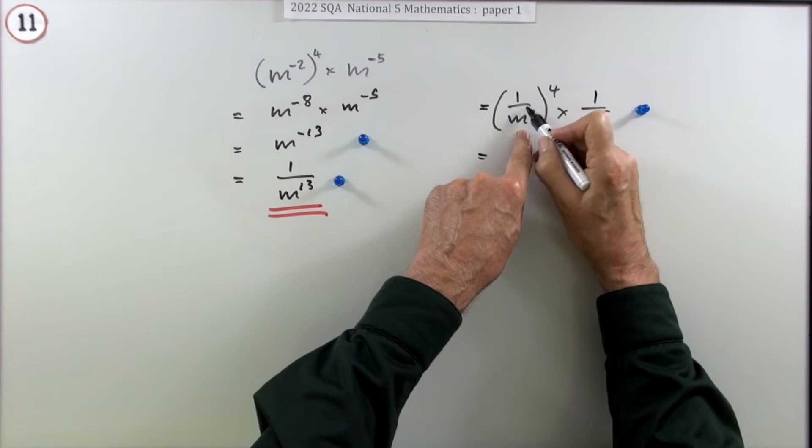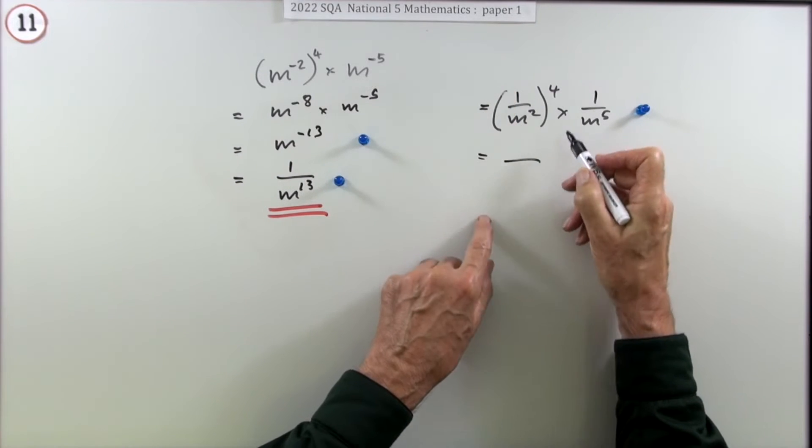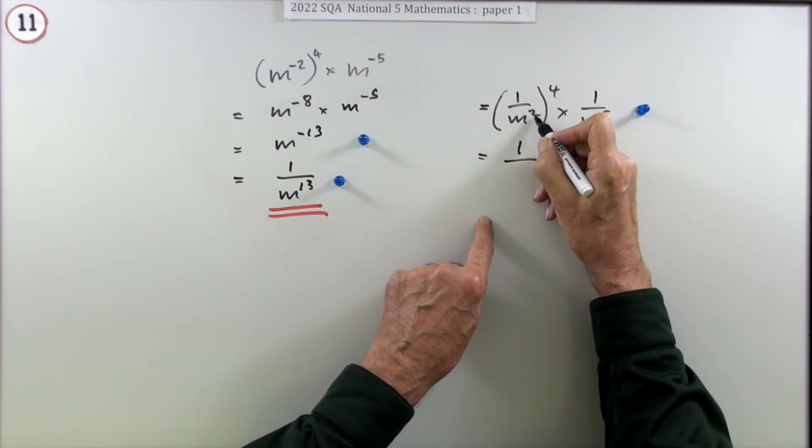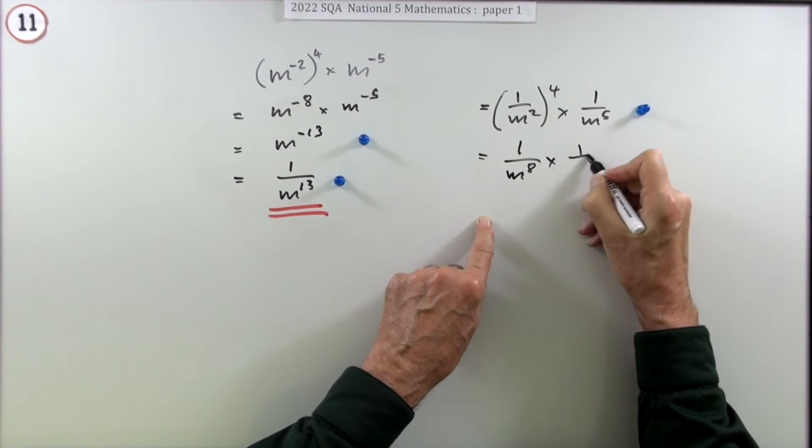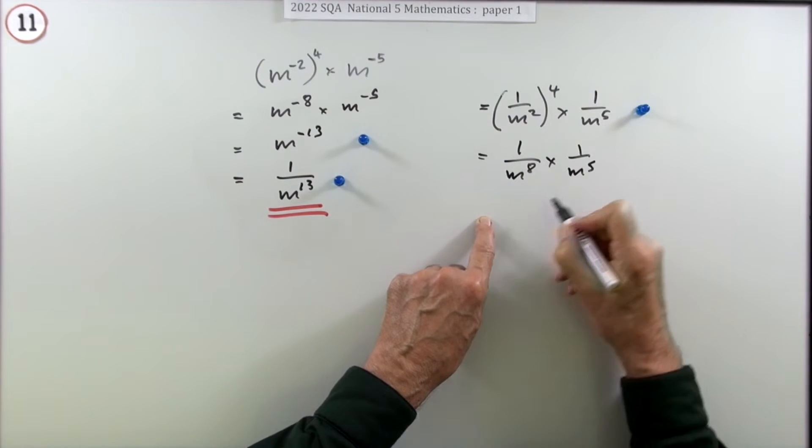Now the mark for dealing with a power of a power, well suppose since you've got a fraction you'll have to do them both now. Well the top's easy, 1 to the power 4 is just 1, but m squared to the power 4, that would be m to the 8, power of a power multiply the powers, over m to the 5.